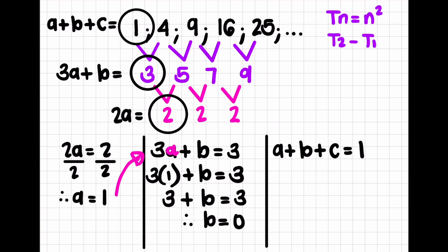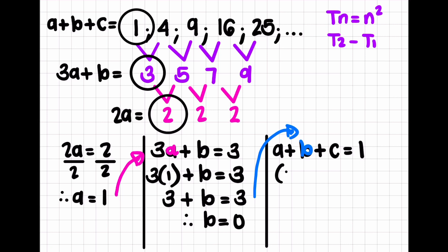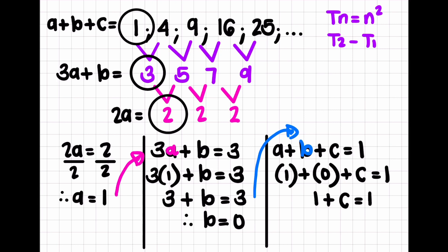So I don't have a b value. Now I substitute both values in: a is 1, plus b which is 0, plus c equals 1. So 1 plus 0 is 1, plus c equals 1. When I isolate c, I take the 1 across — 1 minus 1 is 0. So the c value is also 0. I've now determined my a, b, and c values.